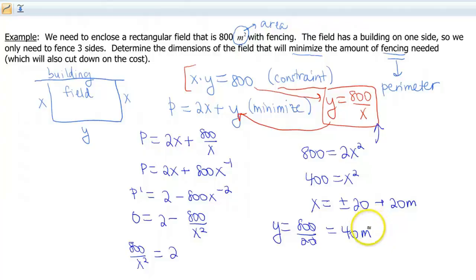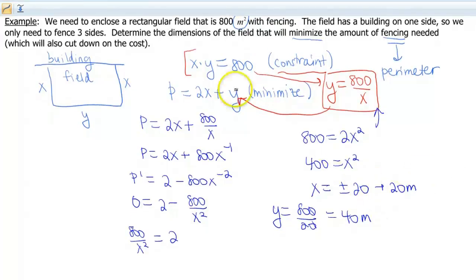But have we answered the question? I think so. Determine the dimensions of the field that will minimize the amount of fencing. Absolutely. Now if you really wanted to, or if the question asked us about the fencing, we could then plug that back into our perimeter equation. So we do 2 times 20 plus 40. So that would end up saying that we would need 80 meters of fencing.